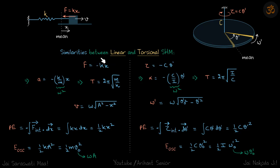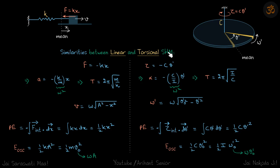Before solving this problem, let's see some similarities between linear and torsional SHM. We are familiar with linear SHM — one way we can represent it is to attach a spring, so that if we displace the mass by distance x, the restoring force is kx. Let's say the body is moving with velocity v. We'll write the familiar equations and then see the analogous equations in torsional SHM.